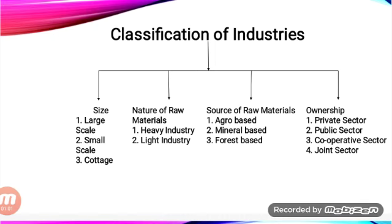The second basis is nature of raw materials — what type of raw material is used. When heavy raw material is used it is called a heavy industry. When the industry uses light raw material it is called a light industry.